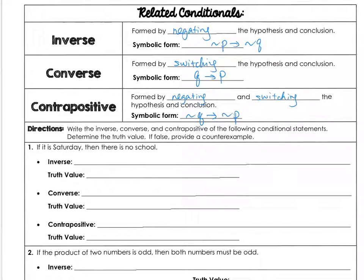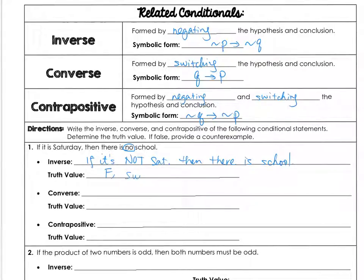Example: 'If it is Saturday, then there is no school.' The inverse negates both statements: 'If it is not Saturday, then there is school.' Notice the original conclusion was already a negation, so a double negative makes a positive. The truth value here is false, because Sunday also has no school.